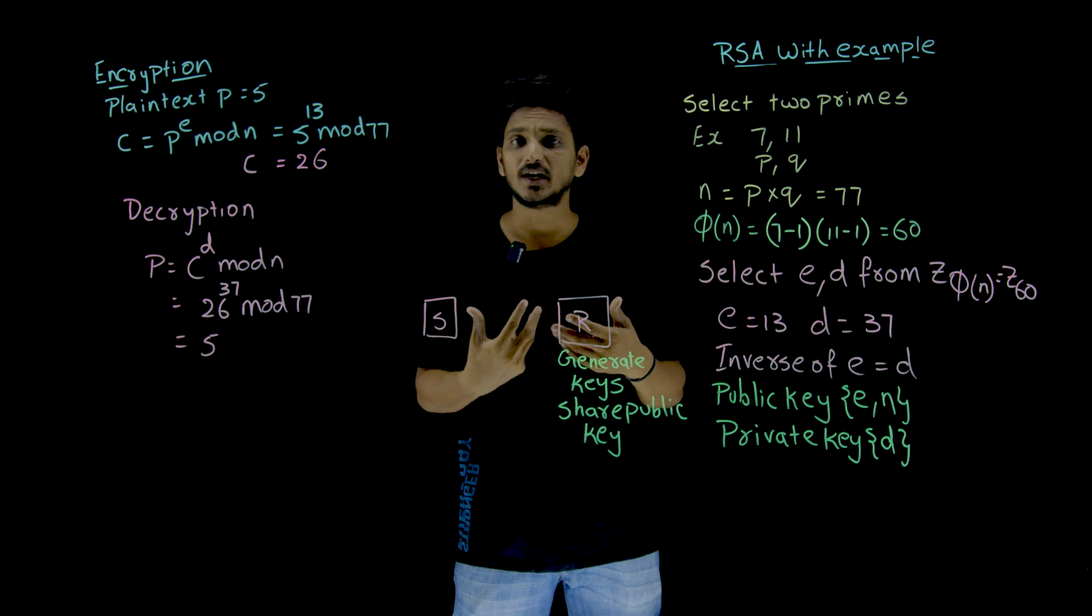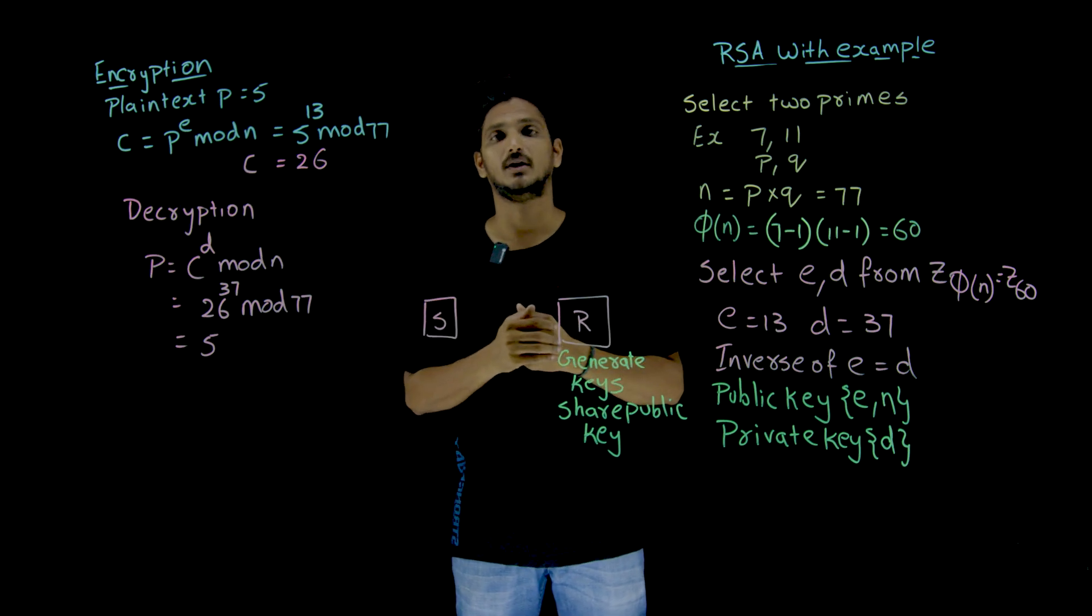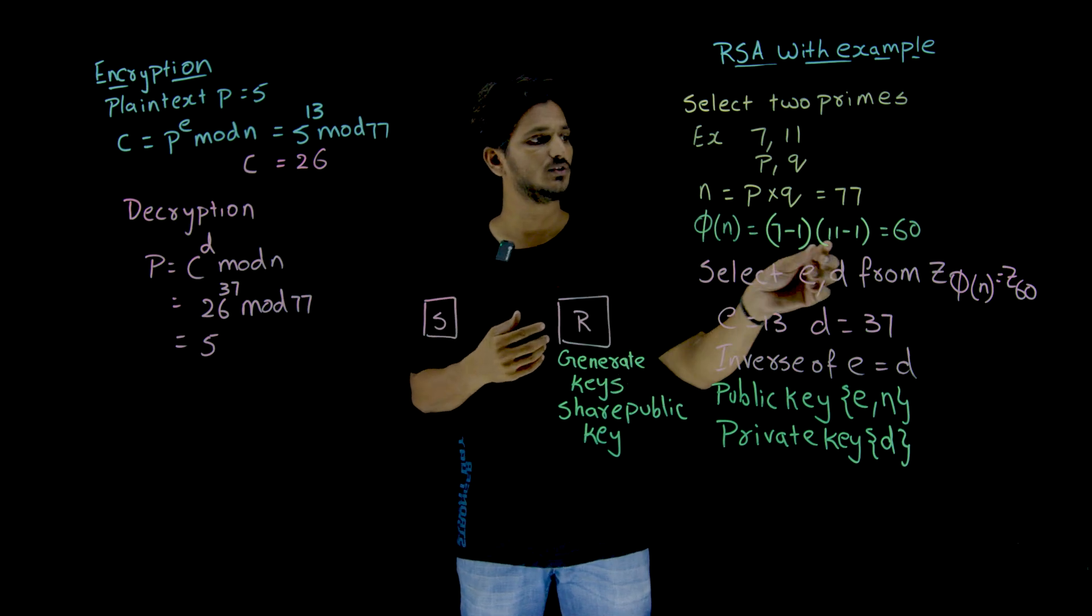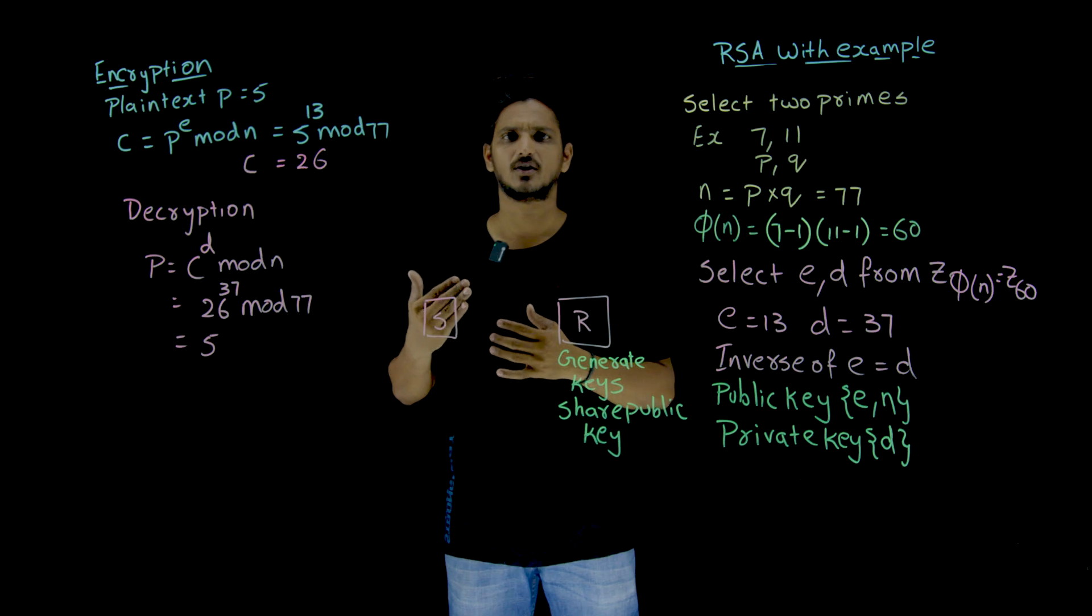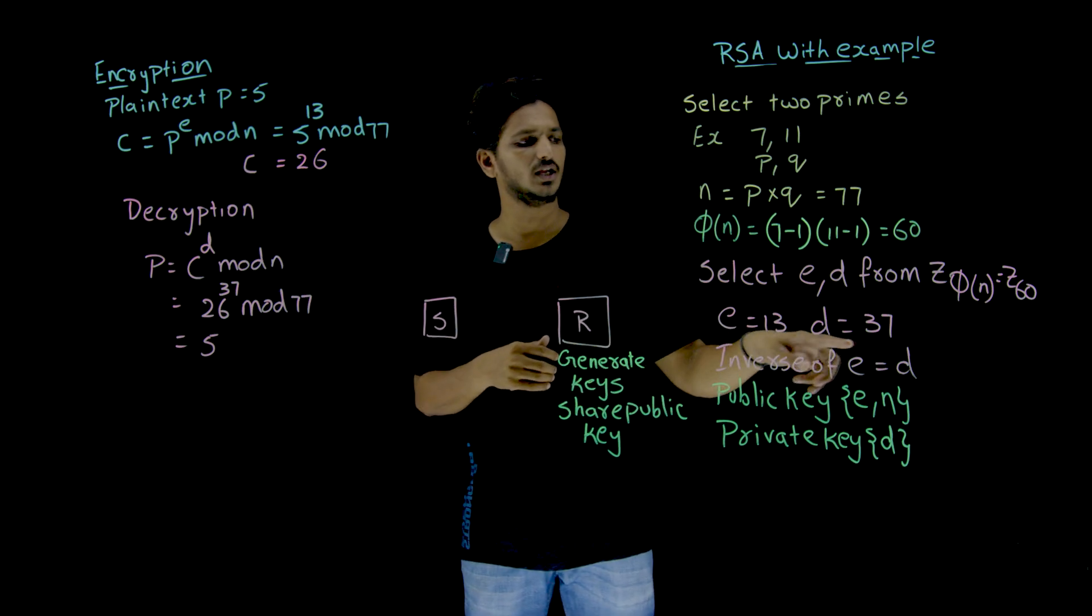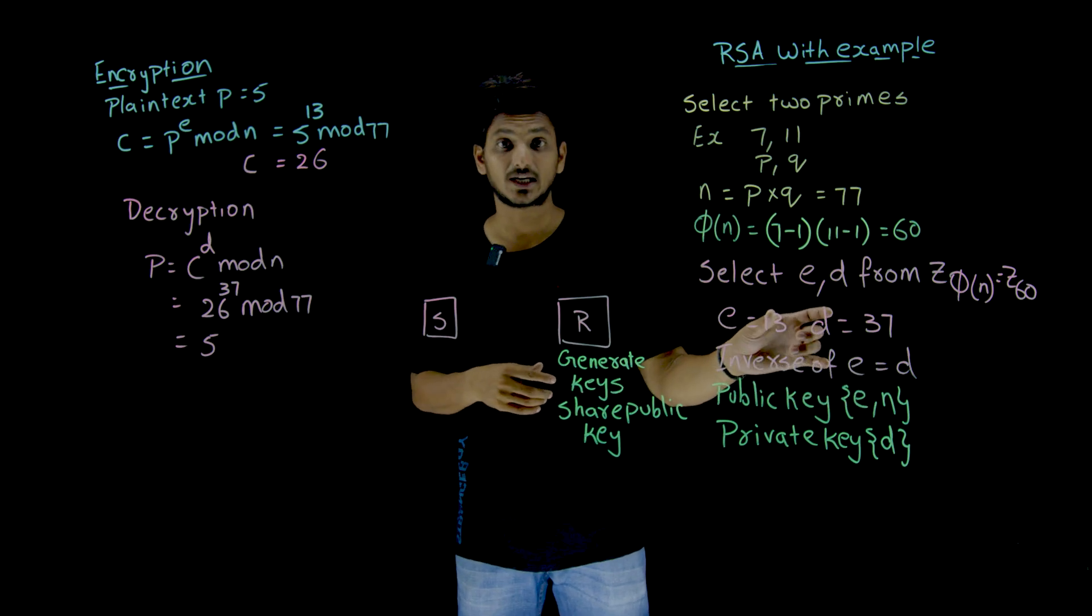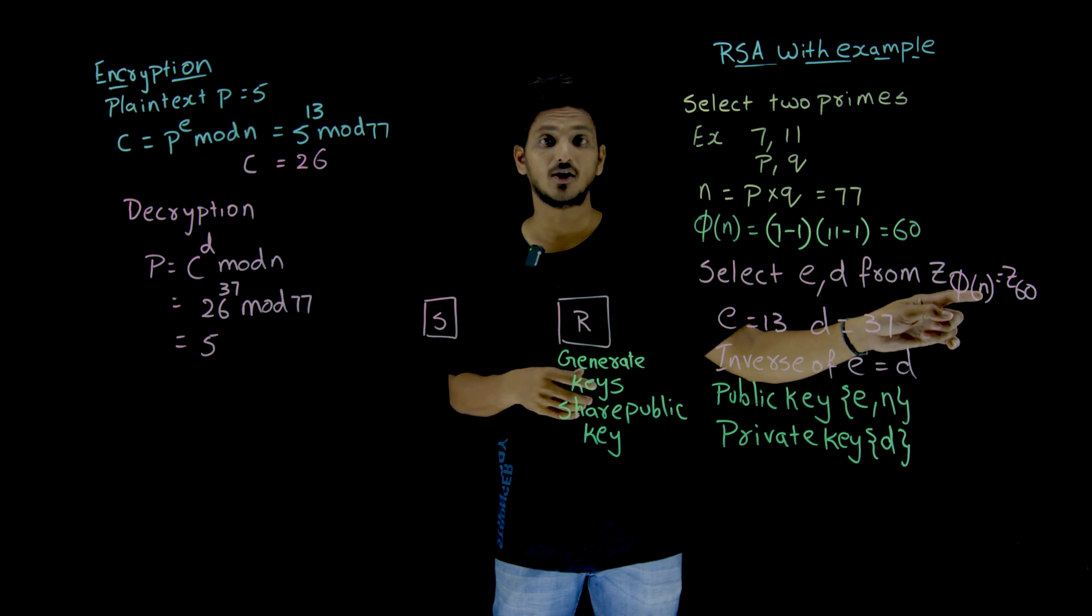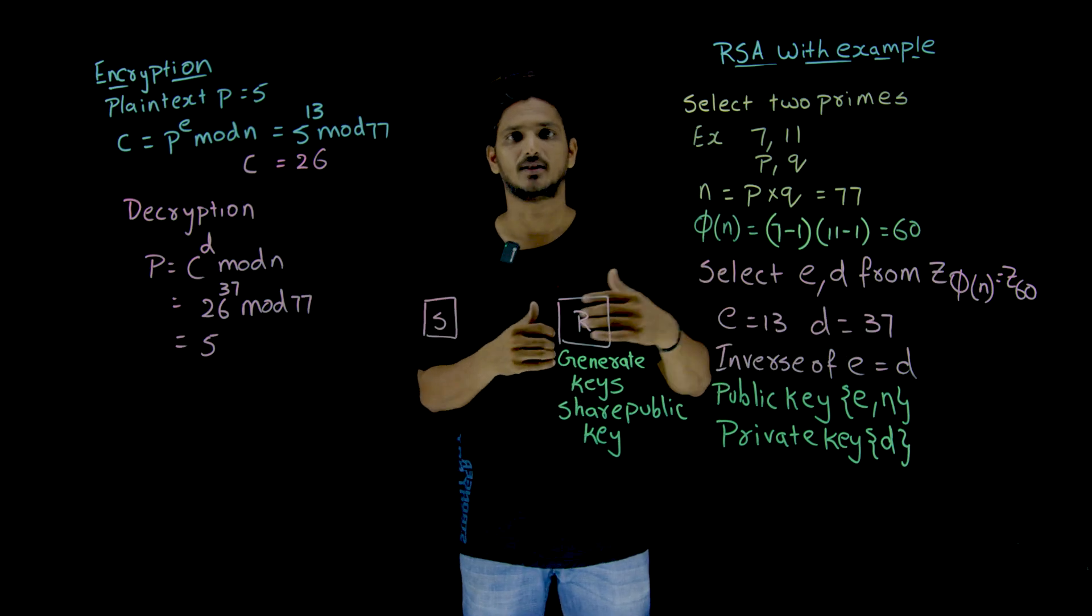How are you going to identify the inverse value? By using extended Euclidean algorithm method. That can be done in polynomial time. So you can easily identify E and D. Inverse of E is equal to D. But we have selected this set from Z_Phi(n). Don't forget this. This is very important because the key lies there.